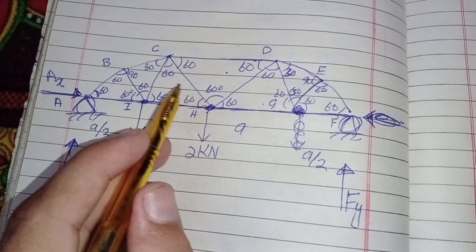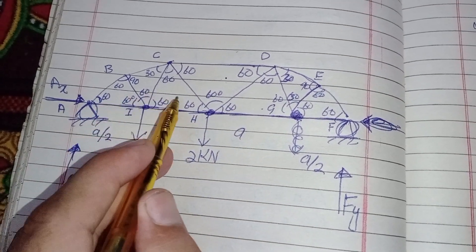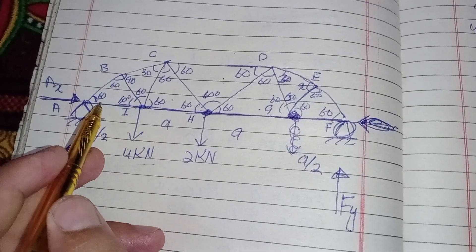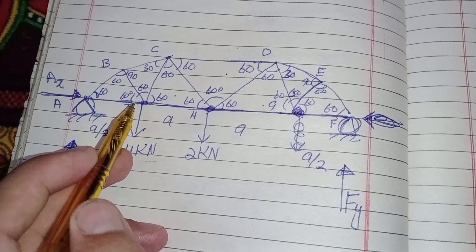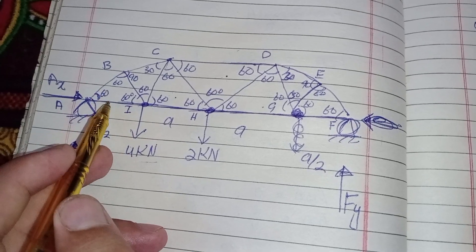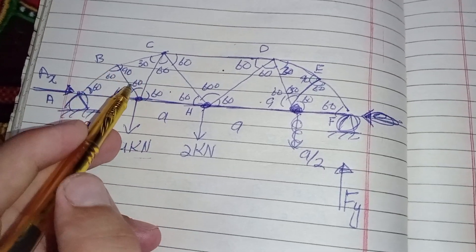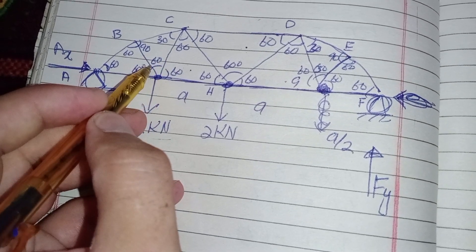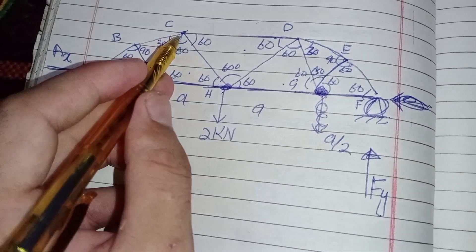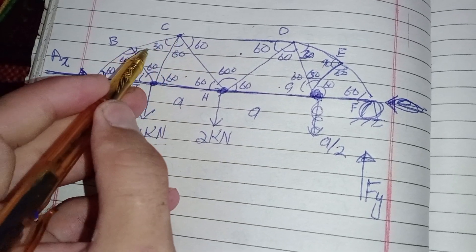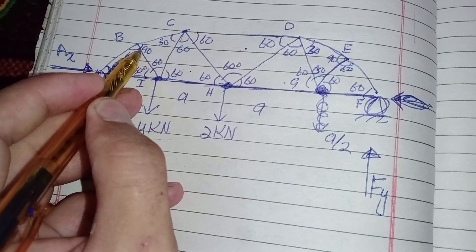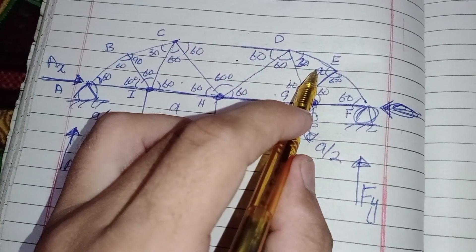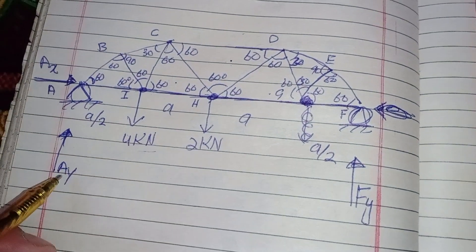The angles between the triangles — all of them are equilateral triangles. Therefore the angle between these members is 60 degrees. There is a small trick: this angle is 60 degrees and this is 30 degrees, making 30 degrees with the x-axis, and the whole angle is 90 degrees. The same applies to this triangle.